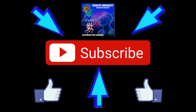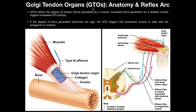Welcome back to Anatomy & Physiology on Catalyst University. In this video, we're going to discuss a proprioceptive organ located in the tendon of muscles called a Golgi tendon organ, named after the Italian physiologist Mr. Golgi. We're going to cover the basic anatomy and the reflex arc associated with the Golgi tendon organ, which we'll also call the GTO.